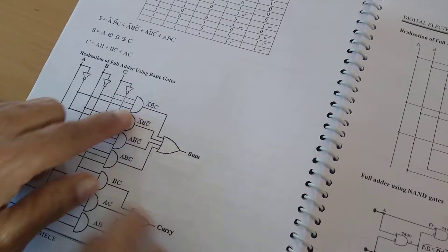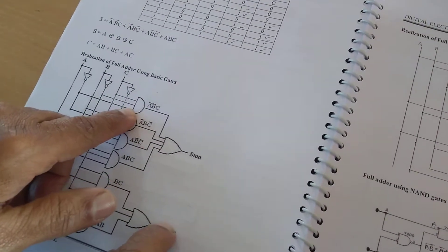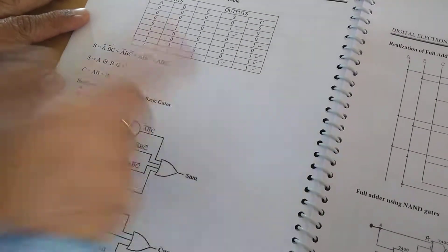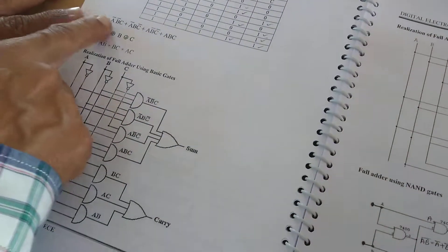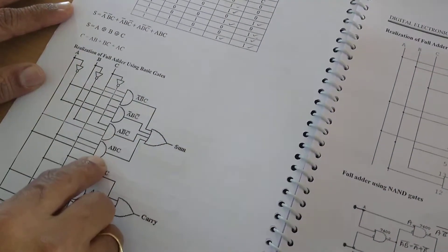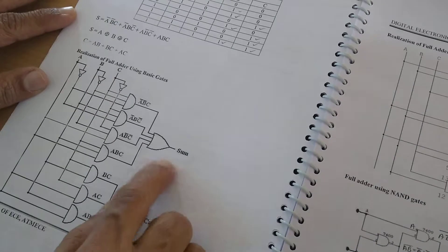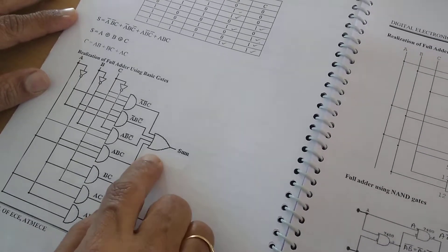Similarly we will be doing the same thing for all the other terms. We require four AND gates with three inputs each. The output of those is connected to an OR gate by which we are going to get the sum.